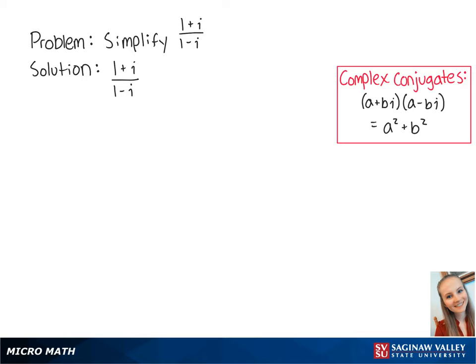First, we want to multiply the numerator and the denominator by the denominator's conjugate. So we multiply by 1 plus i over 1 plus i.